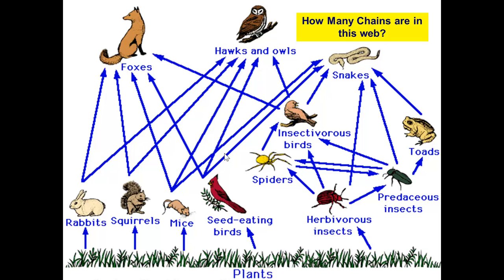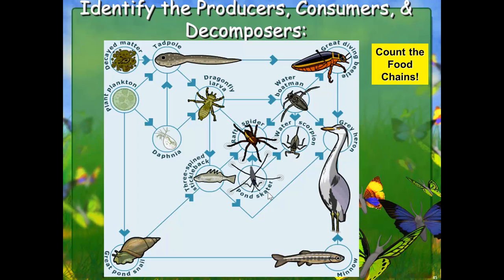Here's another food web example. A rabbit could eat a plant, and then a fox could eat that rabbit — or a hawk or owl could eat that rabbit instead of the fox. Or a bug could eat the grass, a bird could eat the bug, and then a fox could eat that bird. It can go any way — showing the different possible sources of energy for each animal.